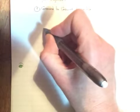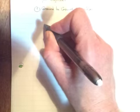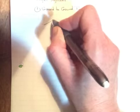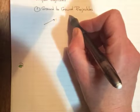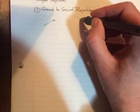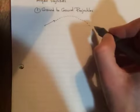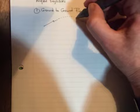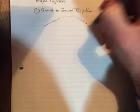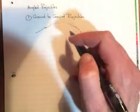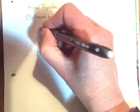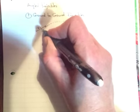One is called ground to ground, and the other will be creatively called non ground to ground. So for today, ground to ground. And what that means is, whatever, it doesn't necessarily mean it's actually leaving from the ground. But wherever it leaves from, whatever height, maybe I throw it from shoulder height, and someone else catches it from that same shoulder height. So it goes up, and it comes back down to the same height that it left from.